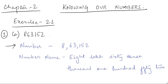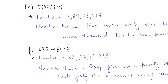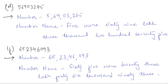After the ones period, we count two digits and put commas. Here the number is 863152. After putting the comma as per the Indian place value chart, the number becomes 8,63,152, which is read as eight lakh sixty-three thousand one hundred fifty-two. The number name is: eight lakh sixty-three thousand one hundred fifty-two.